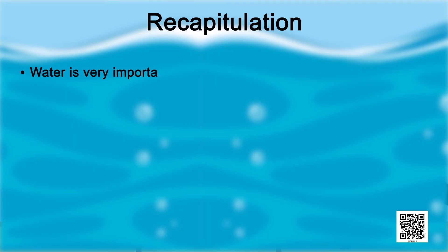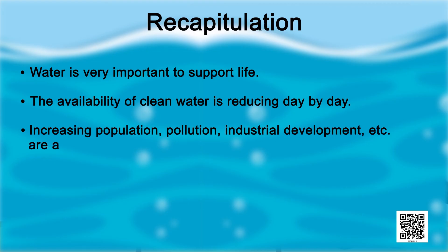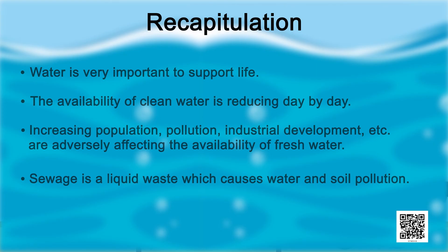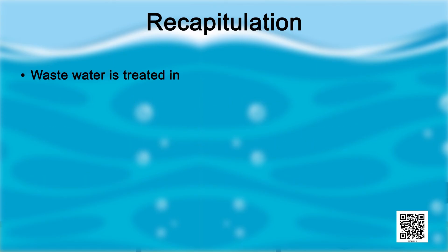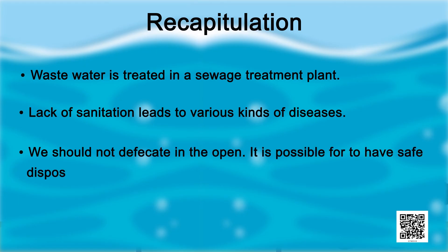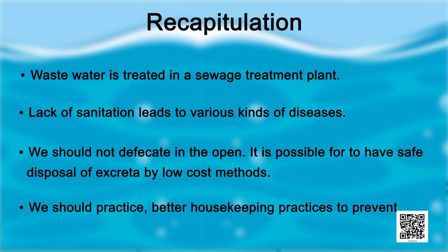Recapitulation. Water is very important to support life. The availability of clean water is reducing day by day. Increasing population, pollution, industrial development etc. are adversely affecting the availability of fresh water. Sewage is a liquid waste which causes water and soil pollution. Wastewater is treated in a sewage treatment plant. Lack of sanitation leads to various kinds of diseases. We should not defecate in the open. It is possible to have safe disposal of excreta by low cost methods. We should practice better housekeeping practices to prevent water pollution.